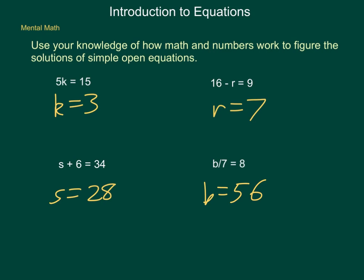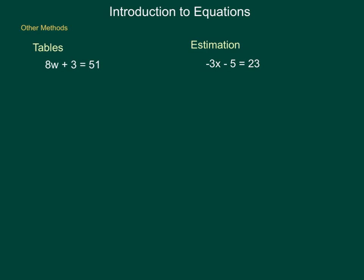So aside from being provided a value to check for an open equation or using mental math from the basic facts that hopefully you are well familiar with, how else can we informally check for solutions to an open equation? Two methods that are good are tables and estimation. Now a table can be something as simple as a t-chart, where we put in assigned values for w, we do our computation, and then we come out with a final answer. Then we would know if it's true or false.